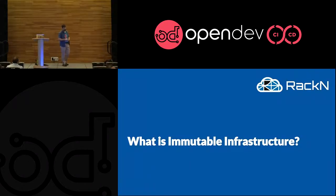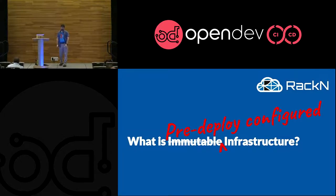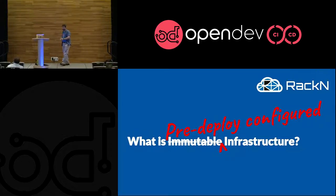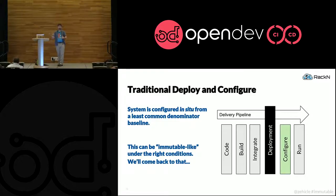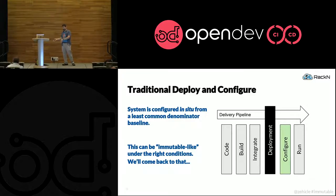This is what immutable infrastructure is about. It's about taking something and not having to change it in that deployment process. It's really about pre-deployed configuration. If you don't like the word immutable, it's really pre-deployed configured infrastructure. In a traditional process, we code, build, integrate, deploy, then configure our systems — Ansible, Puppet, Chef, Salt, however you want to do it. We deploy, then configure.